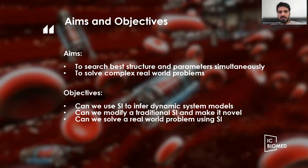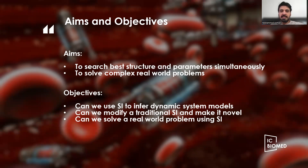The aims and objectives of this presentation are to search for the best structure and parameters simultaneously and to solve complex real-world problems. We will apply the principles of swarm intelligence — similar to how ants search for the best food while avoiding the longest route and finding the shortest path — to inform dynamic system models, modify traditional swarm intelligence to make it novel, and solve real-world problems.